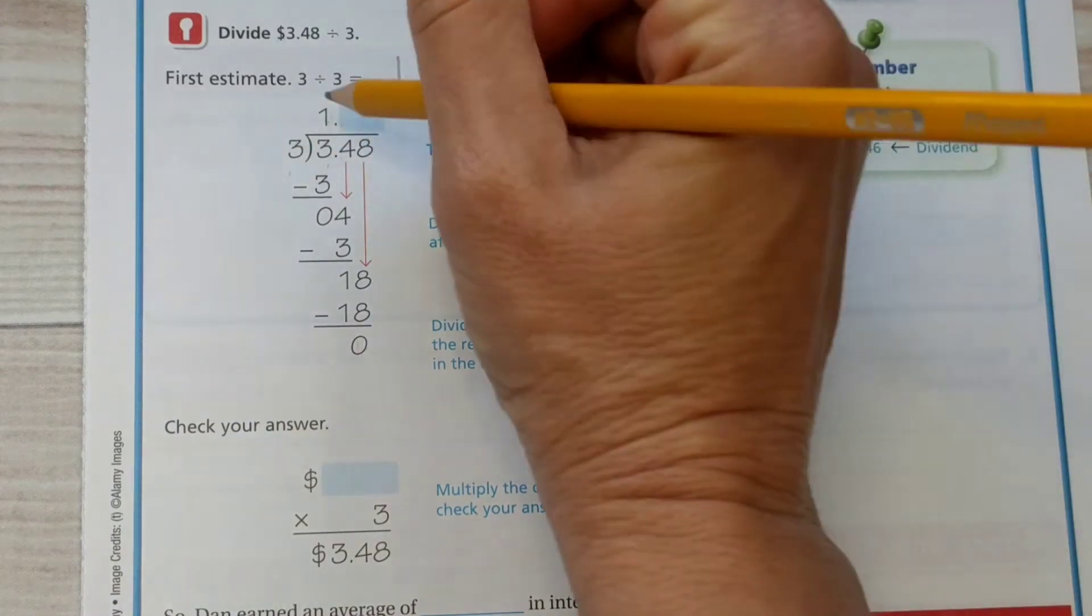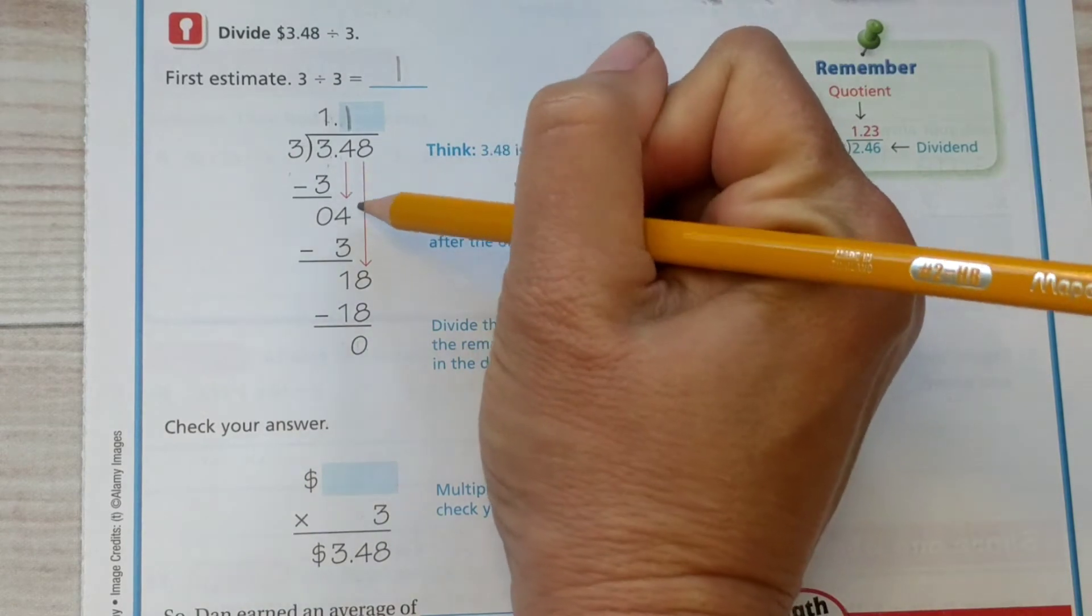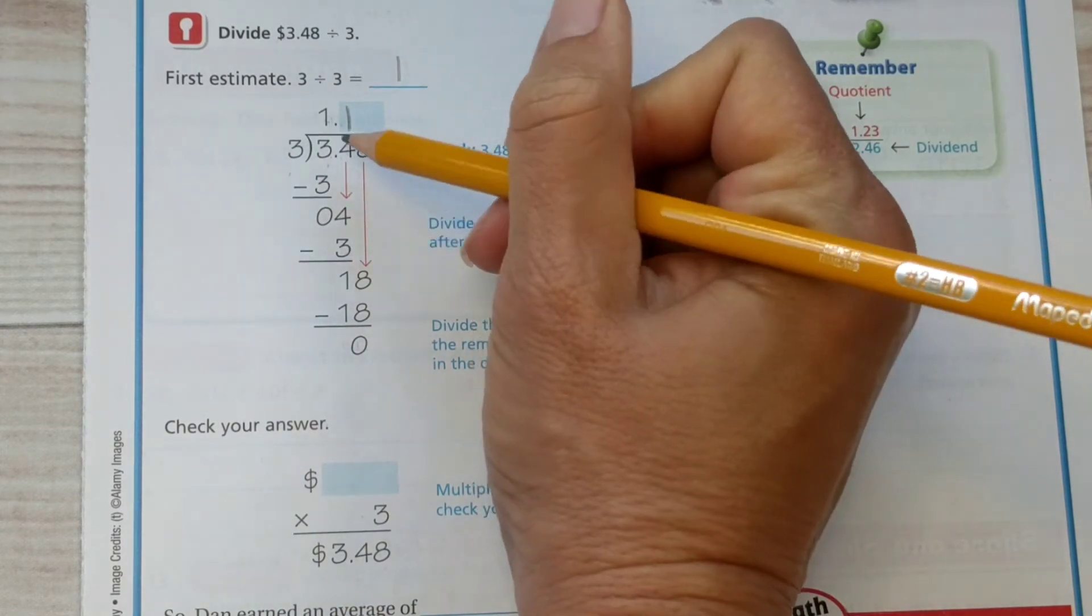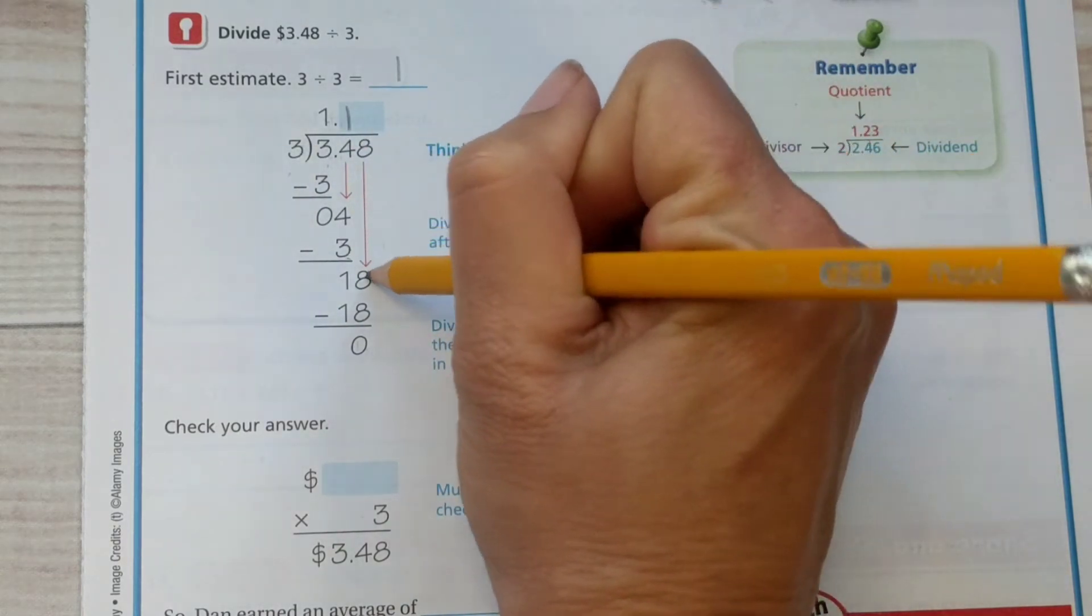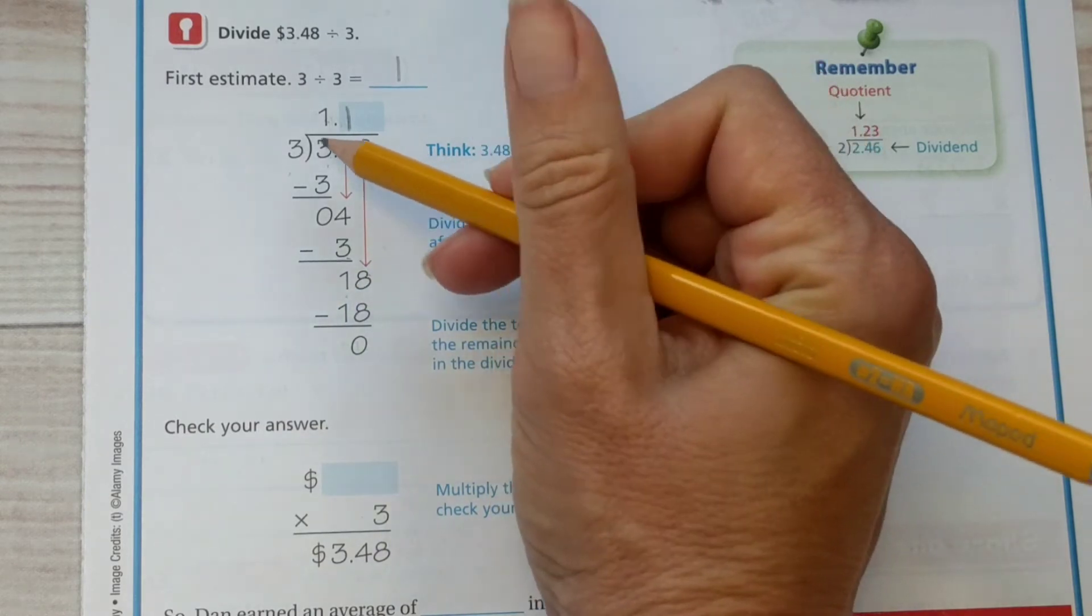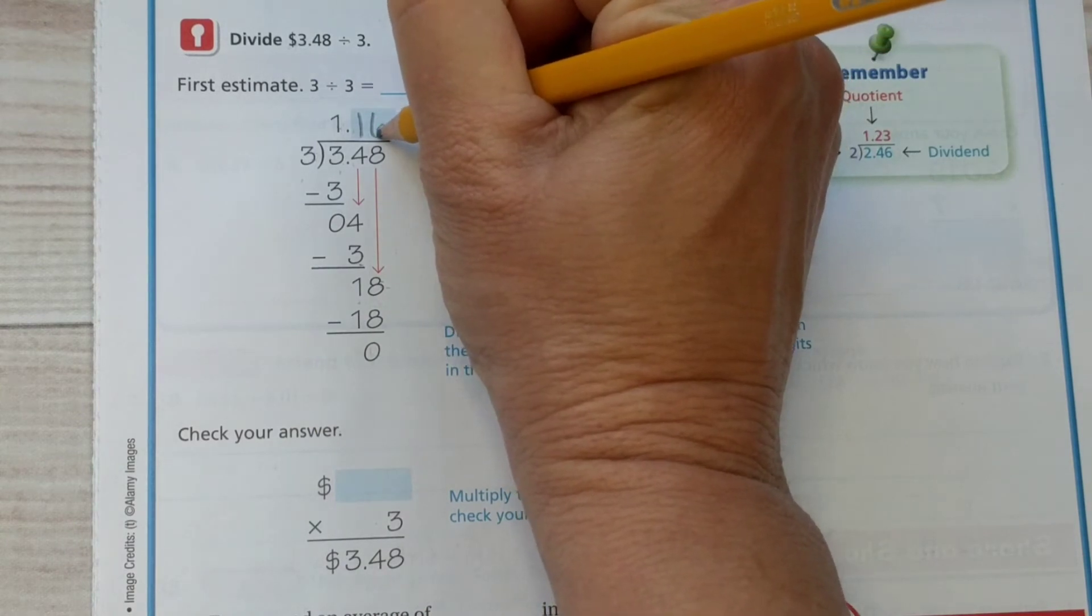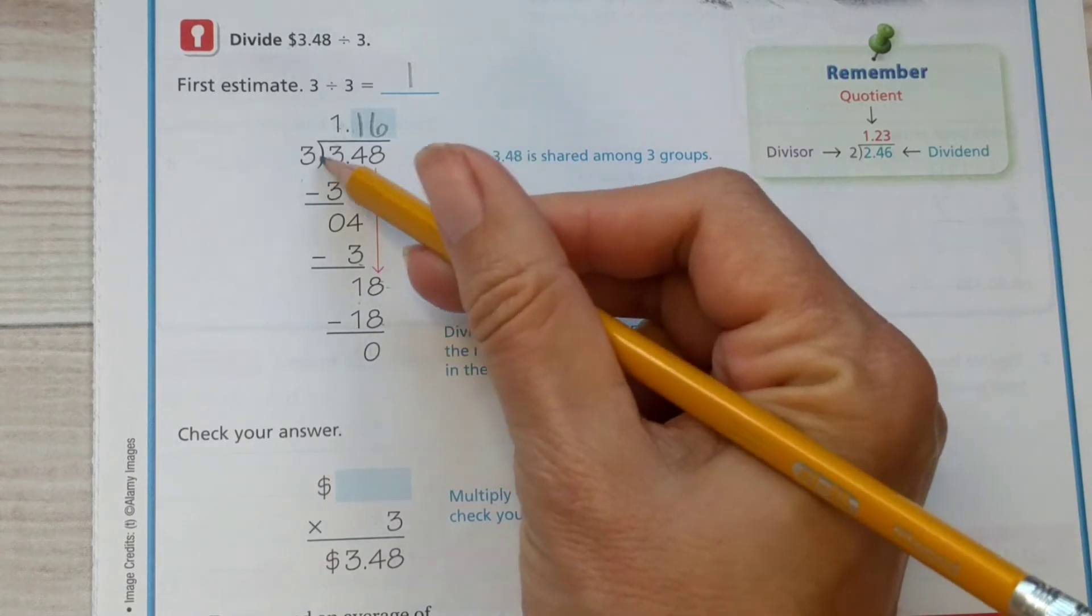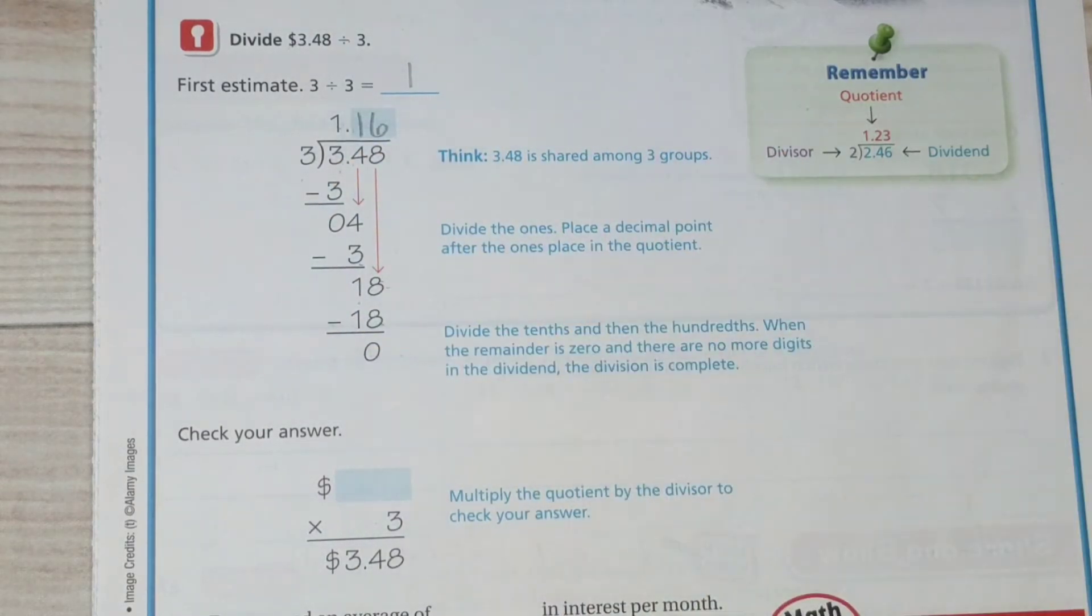Three goes into four one time also. We brought down the four. Three times one is three. Now we bring down the eight. We subtracted, brought down the eight. Three goes into 18 six times. And three times six is 18. Then we subtract and we're left over with a zero.